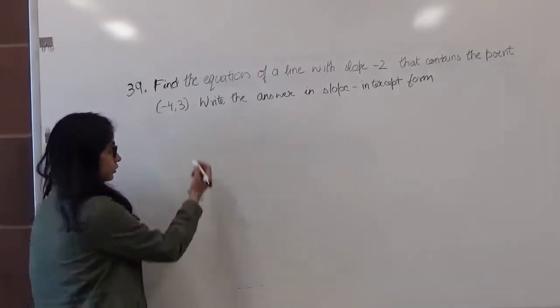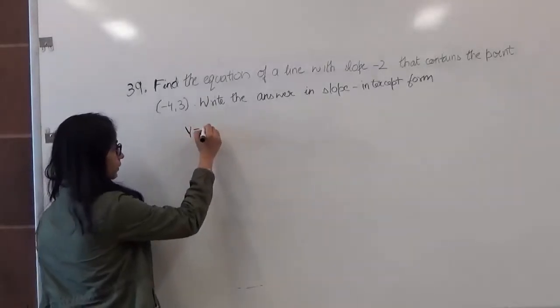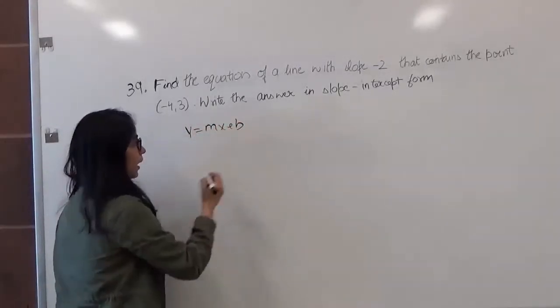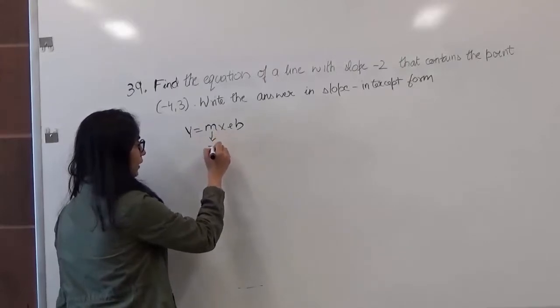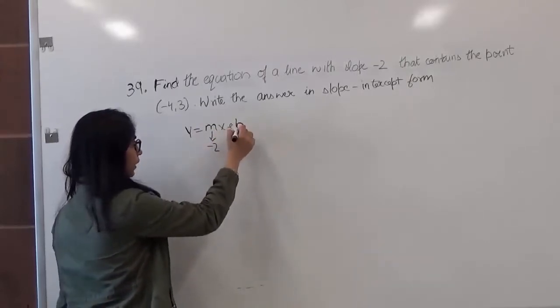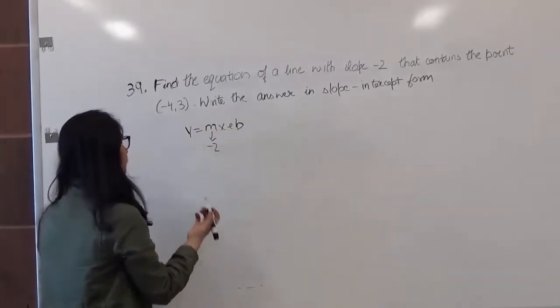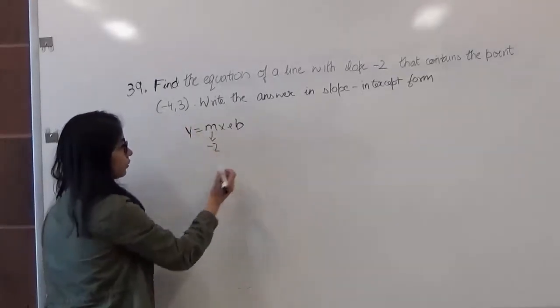I know the slope-intercept form is y = mx + b, and my slope is -2. So I just need to find b, and I can do that by plugging this point and slope into this form.